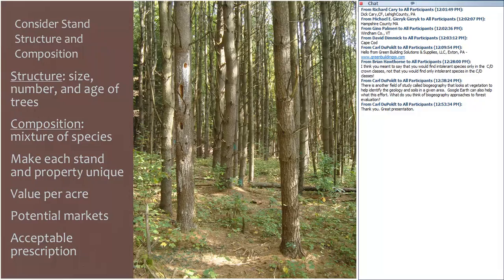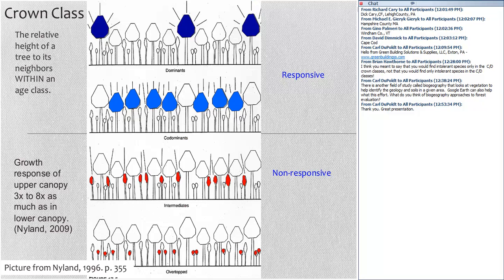From structure and composition, we can calculate the value per acre, think about potential markets, and think about prescriptions to manipulate the forest to achieve some alternative outcome. Crown class is where we find trees that are responsive to management activities — trees in the upper crown class will greatly accelerate in growth if provided with more sunlight. Lower crown class trees — intermediates and overtopped trees — typically have one-third to one-eighth the growth response of upper canopy trees.